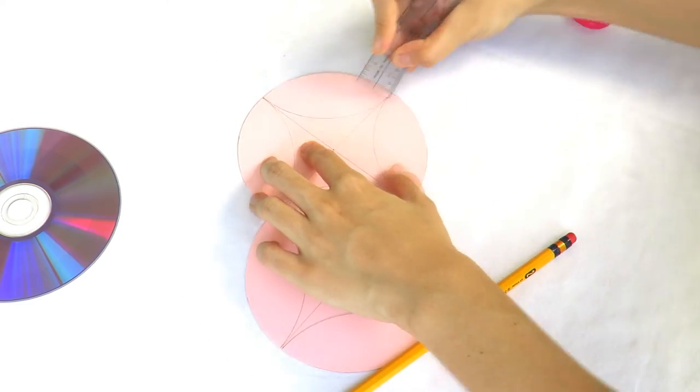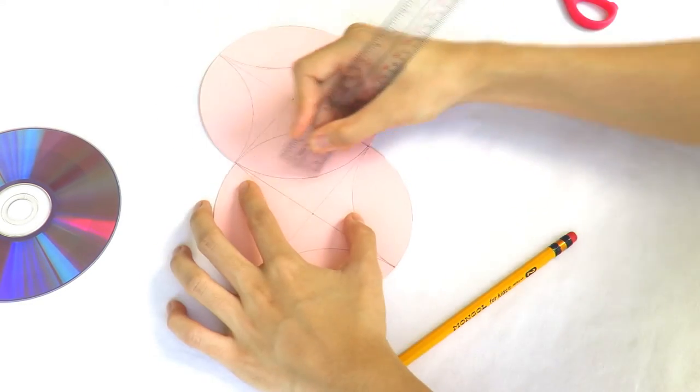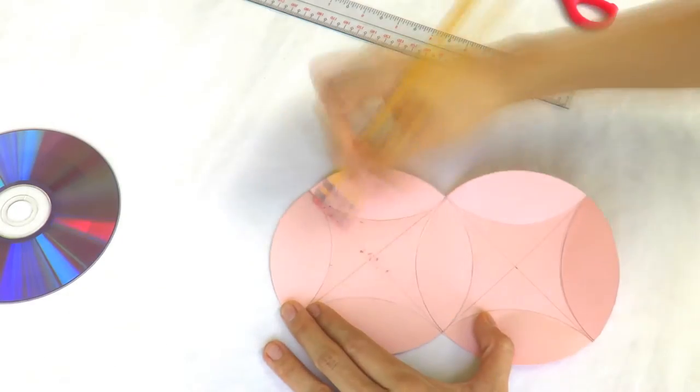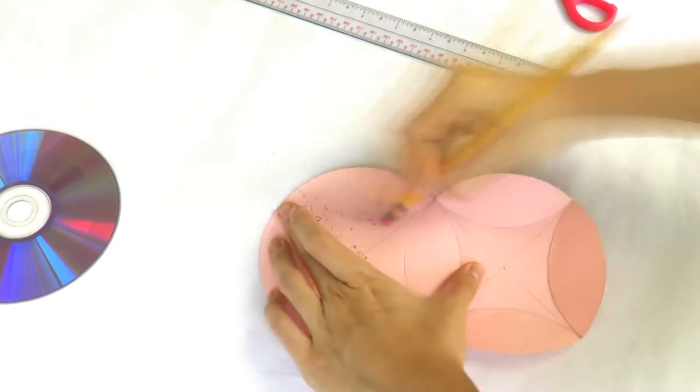Once that is done, score the curvy lines you traced using a ruler. Then, fold the scored lines in to form the walls of your box. Also, don't forget to erase all the lines you drew inside the box so that when you give it as a gift, it'll still look presentable.